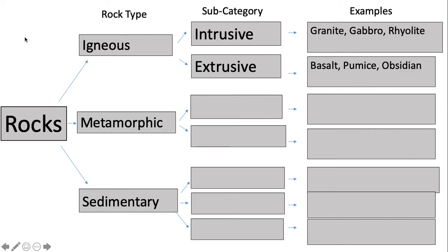Examples of intrusive igneous rocks are granite, gabbro, and rhyolite. Examples of extrusive igneous rocks are basalt, pumice, and obsidian. Your slide should look like this so far.